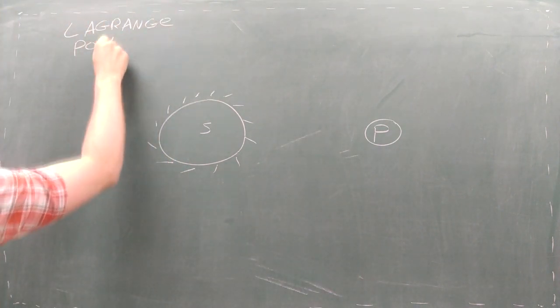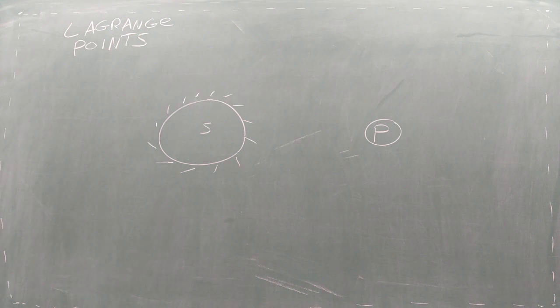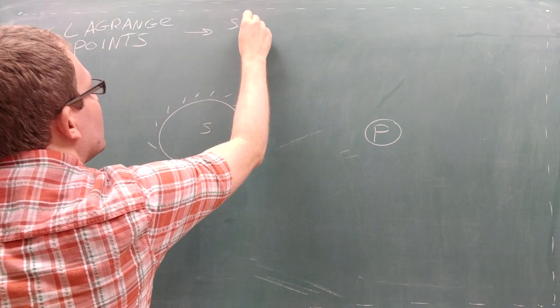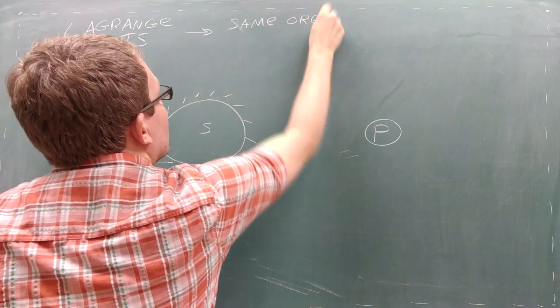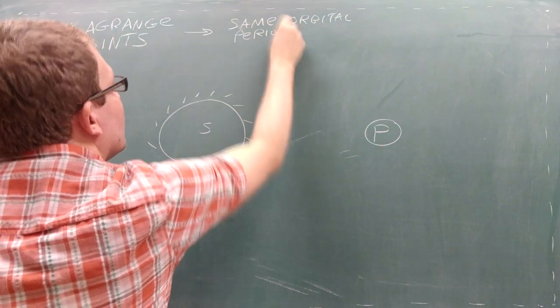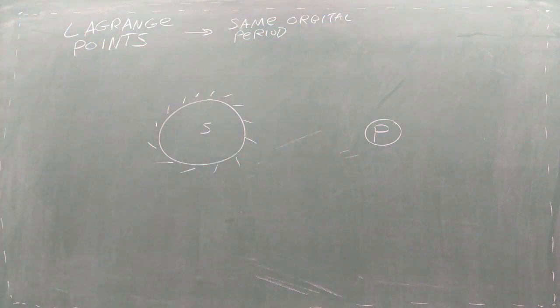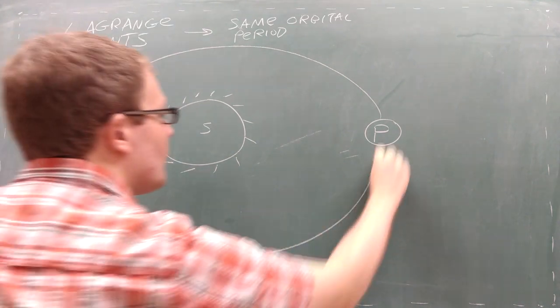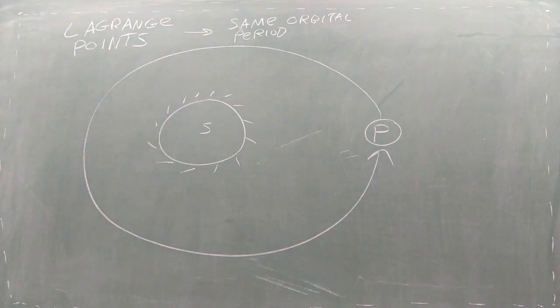For example, there are five special locations called Lagrange points, where the two forces of gravity on the spacecraft exactly cause the spacecraft to orbit the star with the same orbital period as the planet. That means the spacecraft will remain stationary compared with the planet.